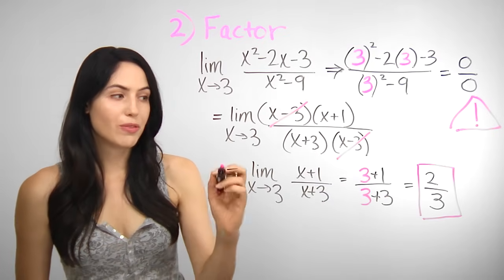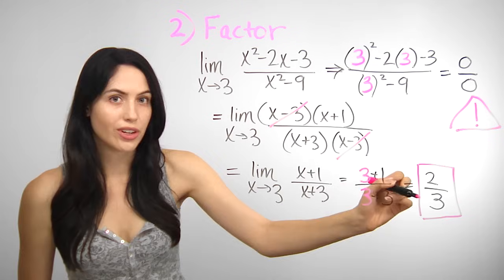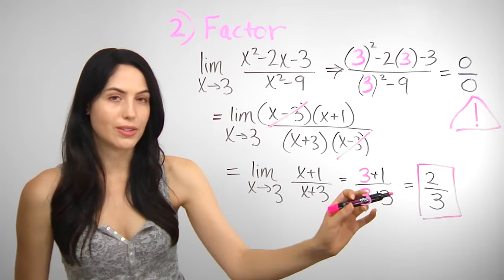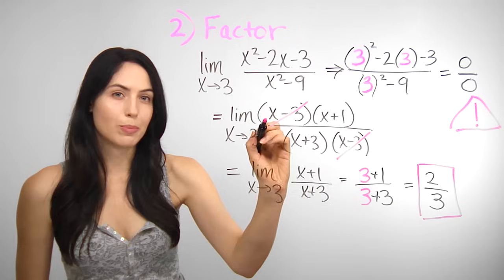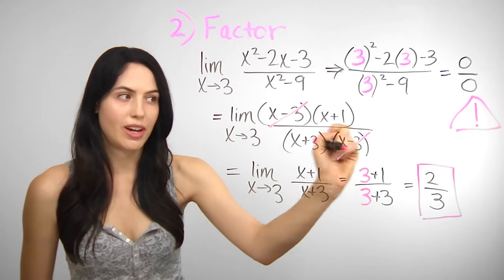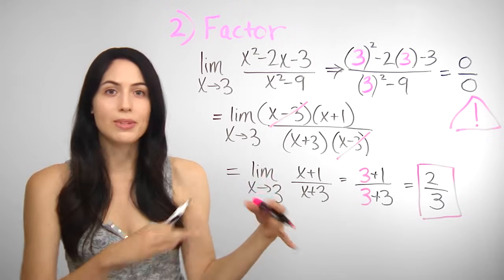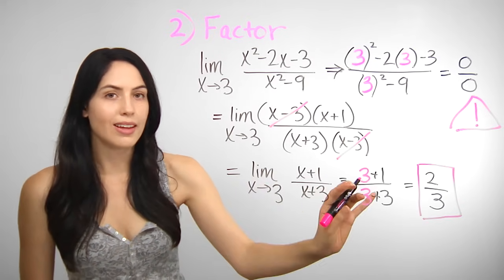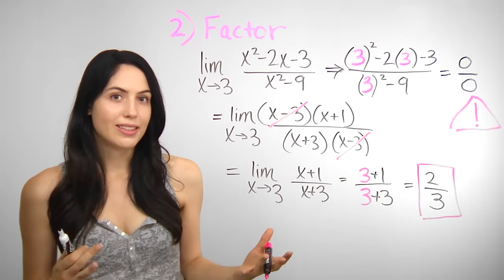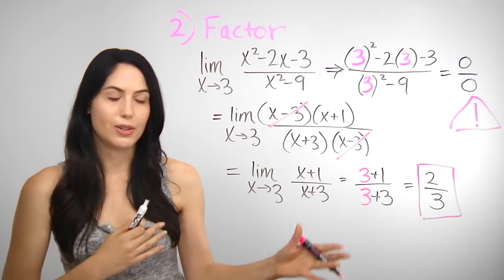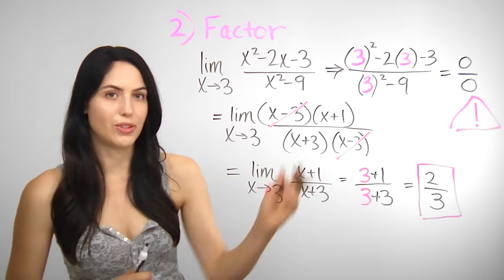This is great, because after factoring we were able to plug in and get an actual finite number, two thirds, as the limit value. The limit is equal to two thirds. The point of factoring was that it got rid of the problem terms — x minus 3 over x minus 3 — those terms that were creating the zero over zero form. Now that they've dropped out, you were able to plug in and get the actual number the limit equals. But what happens if you factor, terms cancel, and then you plug in at the end and you still get zero in the denominator, or zero over zero?